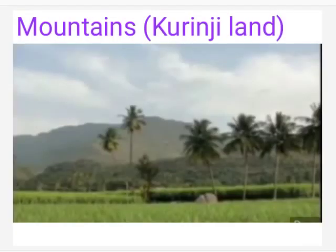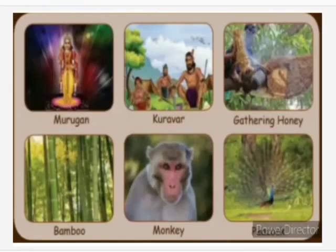First we learn about Mountains — the Kurunji land. Here we see the god, people, occupation, plant, animal, and musical instrument of Kurunji land. The god is called Murugan. The people are called Kuravar. The occupations of Kurunji land are gathering honey, gathering roots, and hunting.